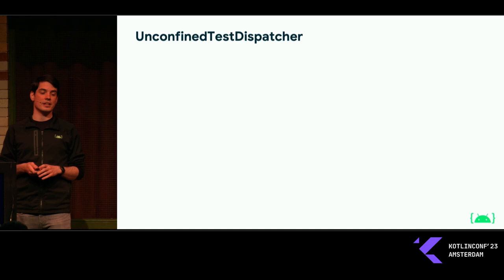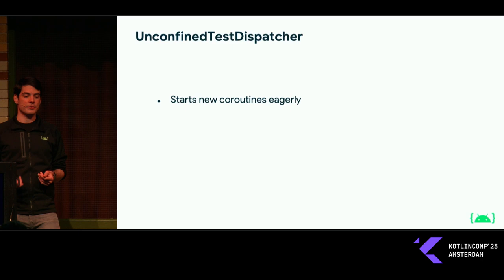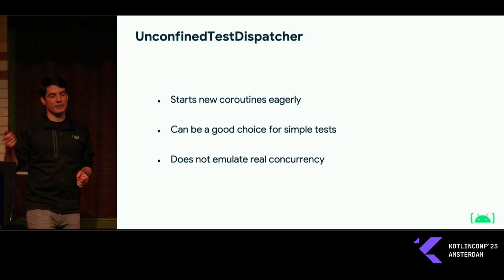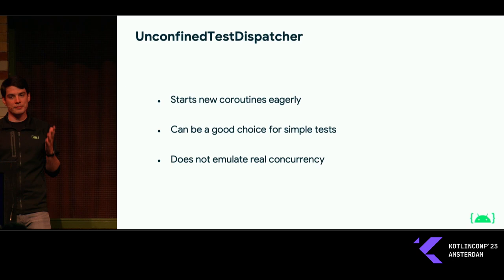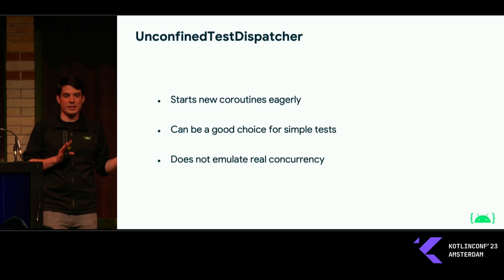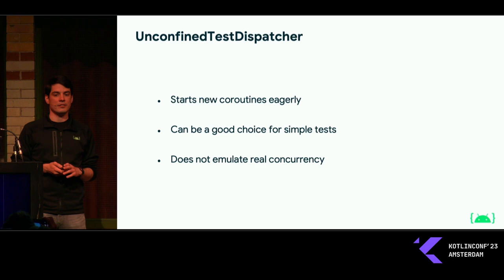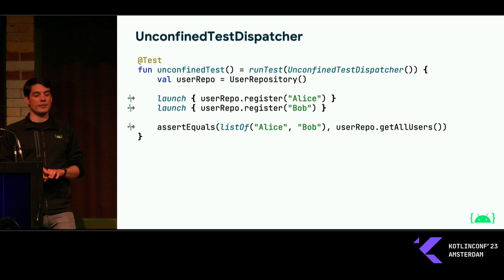Now let's look at what UnconfinedTestDispatcher does in contrast. Again, this will start new coroutines eagerly instead of queuing them up. This might be a good choice for simple tests, however be careful because it really doesn't emulate real concurrency. So if concurrent behavior is an important part of your test, you should look at StandardTestDispatcher first and only use UnconfinedTestDispatcher in certain scenarios.